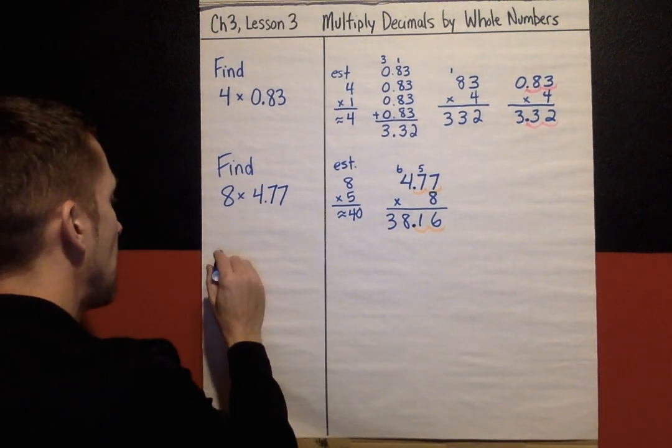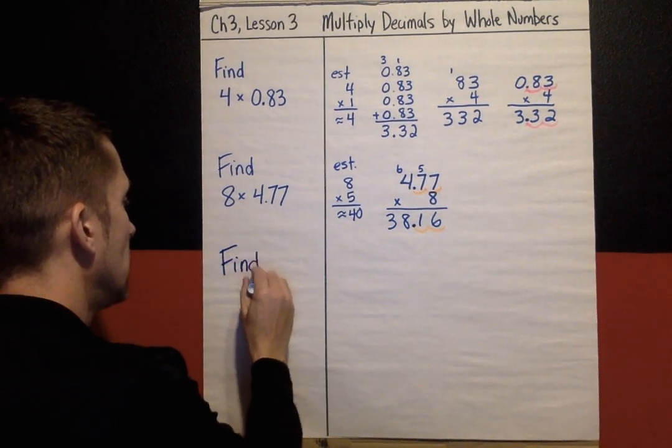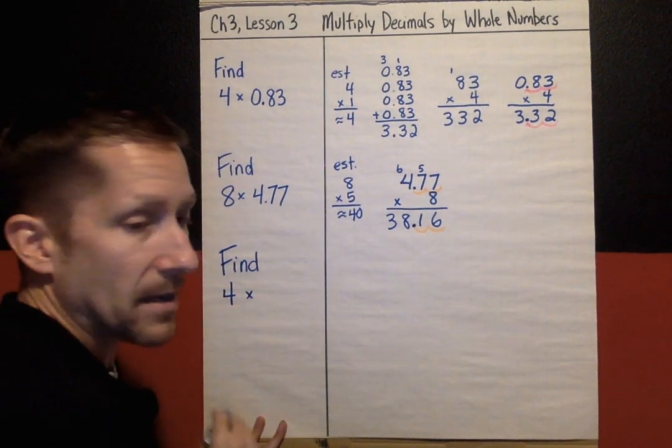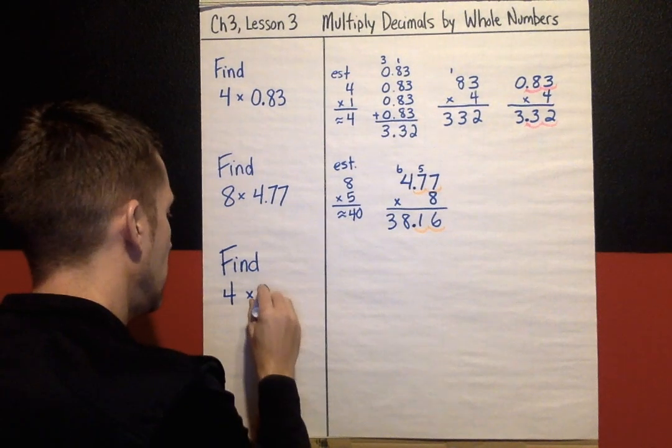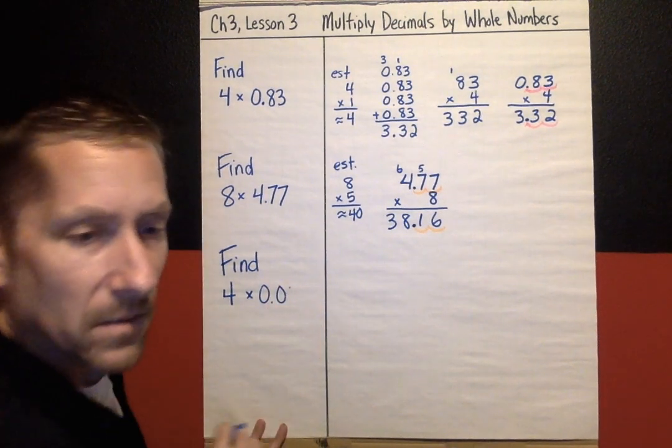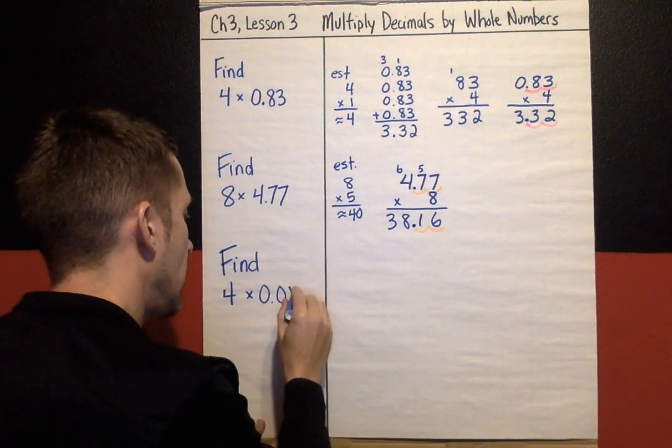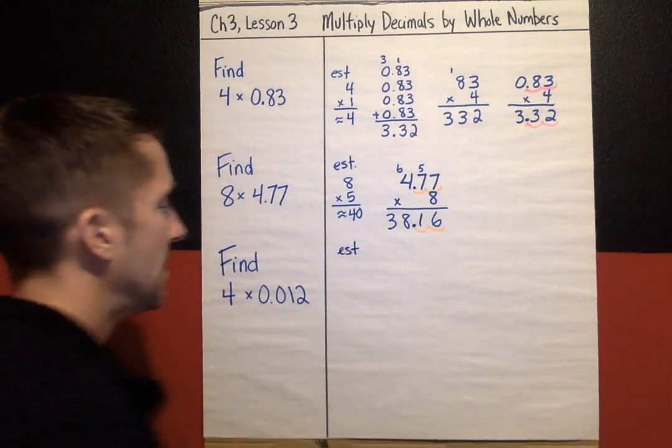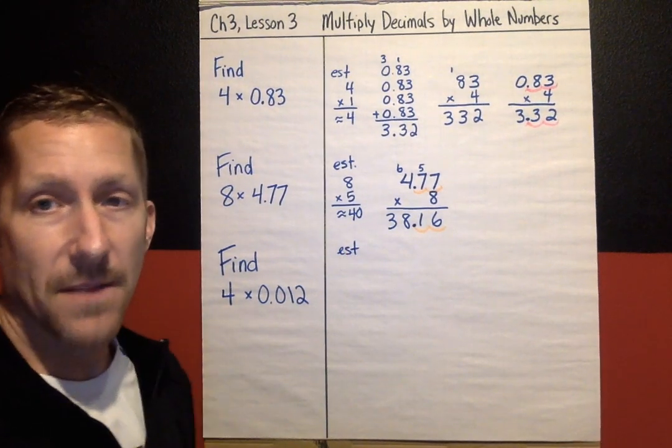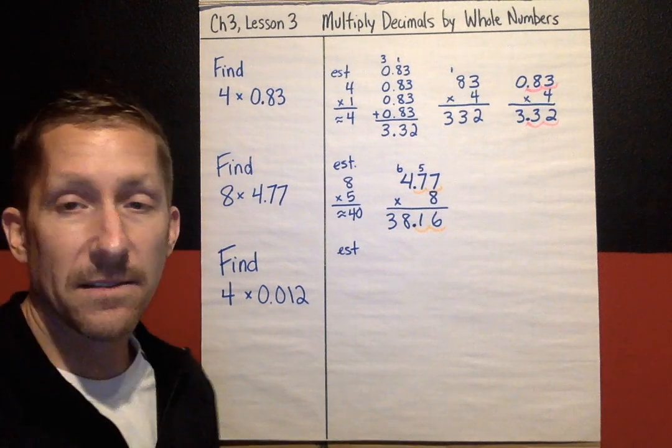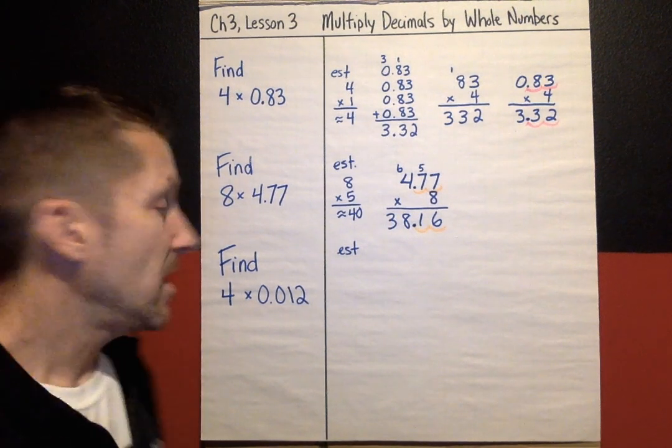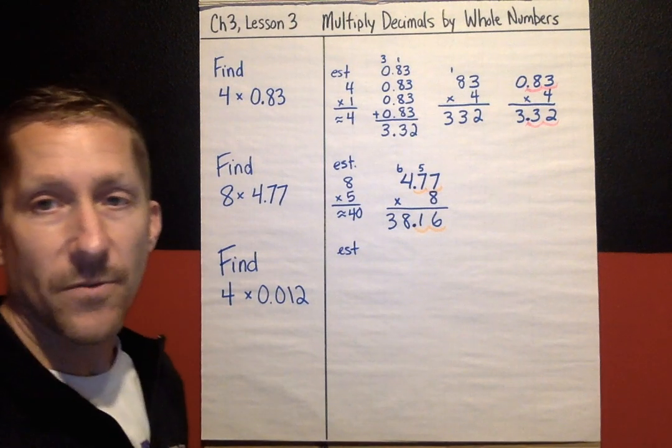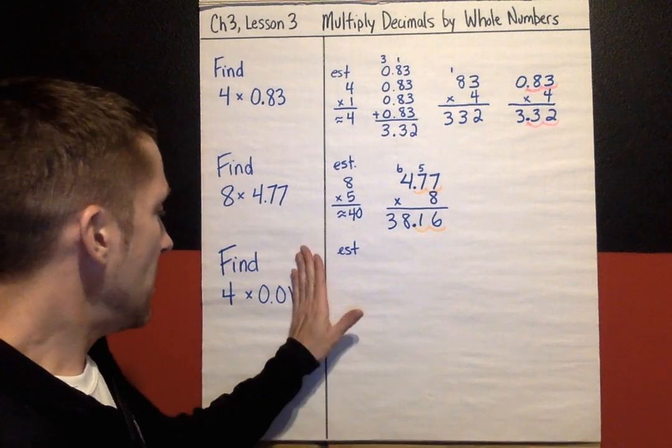Okay, last one. Find the product of 4 times 0.012. Again, estimate if you can. Sometimes, especially when you get really small decimals, estimating becomes more difficult. But again, I'm going to think money. 4 is a whole number 4, that's nice and easy to work with.